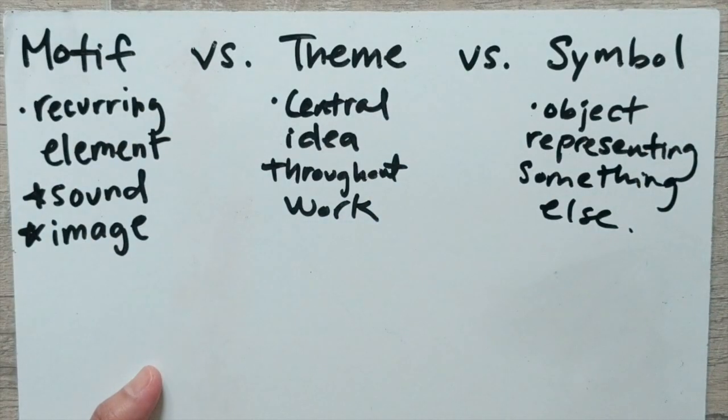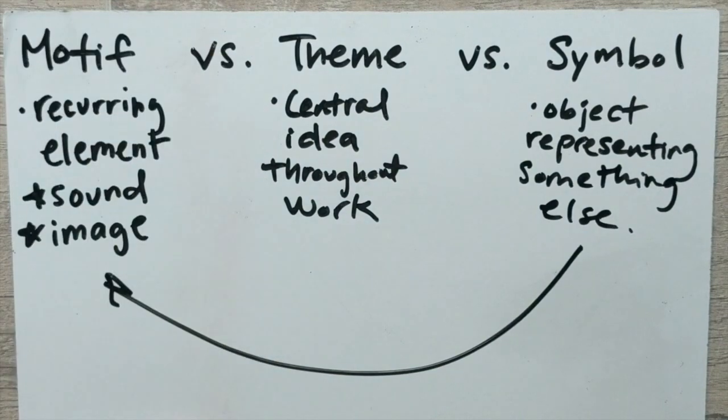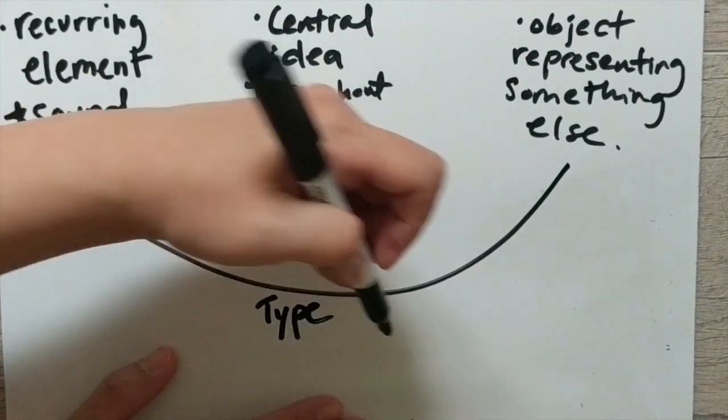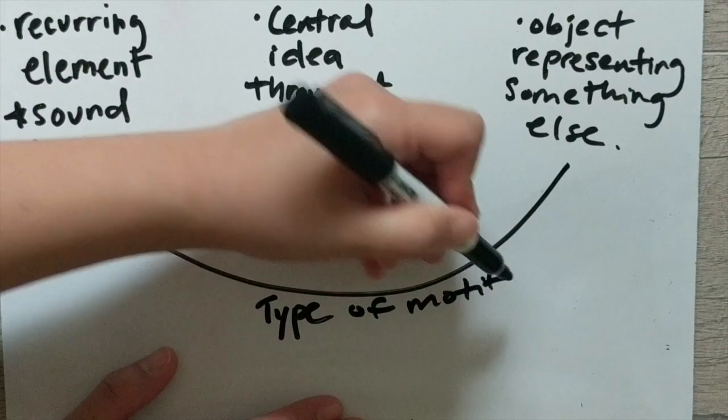Now, a symbol is an object that represents something else. We are pretty familiar with what symbols are. And symbols can be a type of motif.